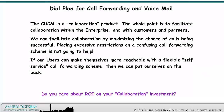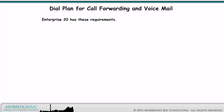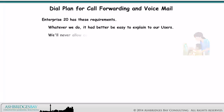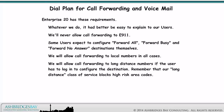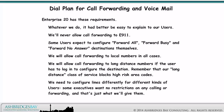Do you care about ROI on your collaboration investment? Enterprise 20 has these requirements. Whatever we do, it had better be easy to explain to our users. We'll never allow call forwarding to E911. Some users expect to configure Forward All, Forward Busy, and Forward No Answer destinations themselves. We will allow call forwarding to local numbers in all cases, and to long distance numbers if the user has to log in to configure the destination. Remember that our long distance class of service blocks high risk area codes. We need to configure lines differently for different kinds of users — some executives want no restrictions on any calling or forwarding, and that's just what we'll give them.